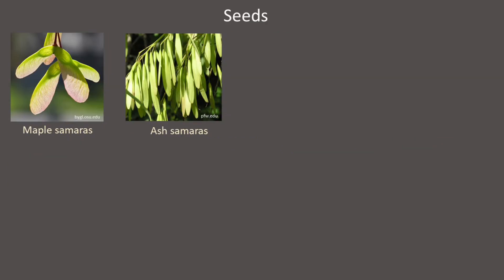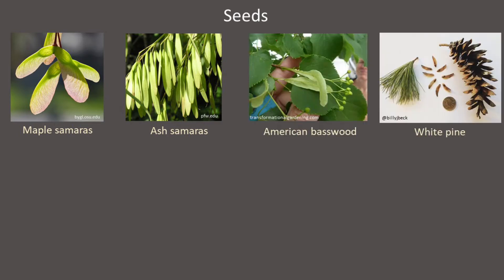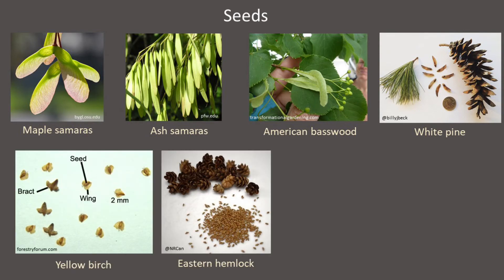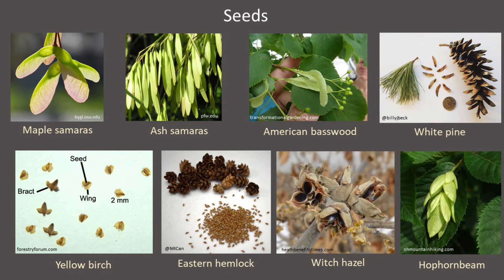Smaller seeds are also readily eaten by many birds and mammals. These seeds include the winged samaras of maples and ashes, the seeds of basswood and pines, the small seeds of birches and hemlocks, and the seeds of a wide variety of shrubs, including witch hazel, hop hornbeam, ironwood, and speckled alder.